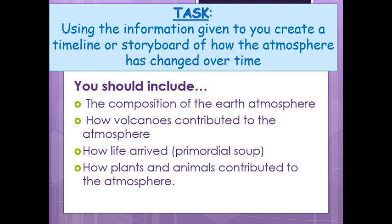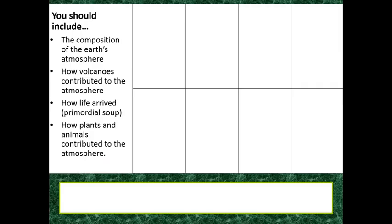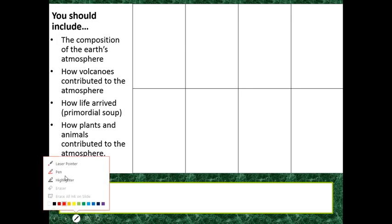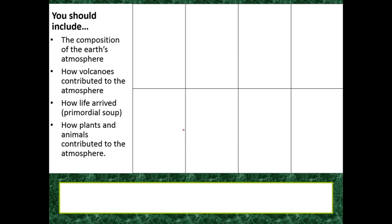Those timelines or storyboards, as I said before, can take a number of different formats. Here's one we've used in the past. What people have done is take a great big page of A4 paper, fold it in half down the middle, then in half again, and then in half again. When you open up the paper it gives you eight quadrants. Then people draw a little picture in the quadrants and put a number, then write a description below of what the atmosphere was like at that time.